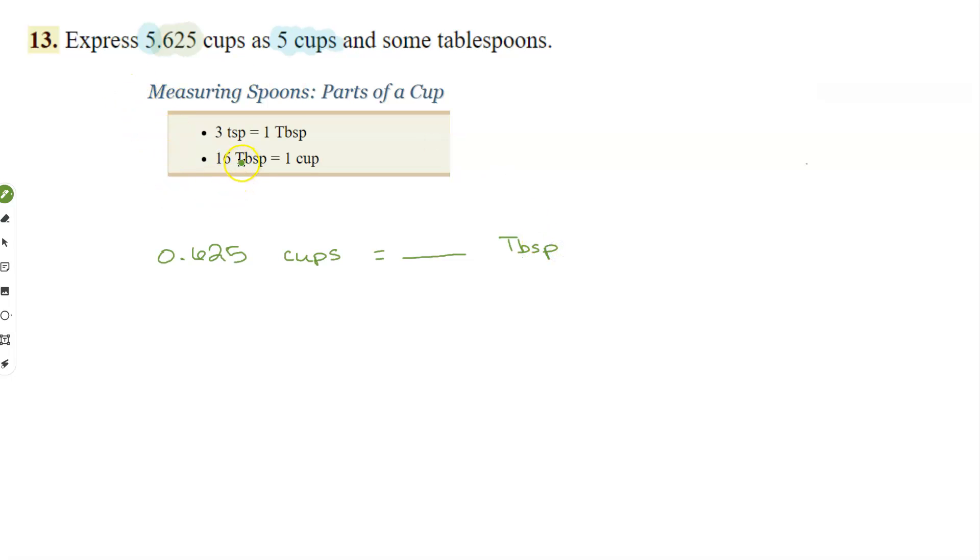We know that each cup is 16 tablespoons. So perhaps you can just look at this and know am I multiplying by 16 or dividing by 16? If so, great! Do it the easy fast way.